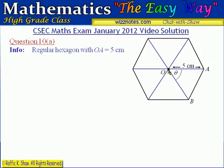Lines from the center to the vertices will form six equal, or six congruent, triangles. I have inserted angle theta which we will be required to calculate. So if this angle is theta, then each of the six angles around the center is also theta. Each of the lines from O to the vertices — OA, OB, and so on — is 5 centimeters, so we really have six congruent triangles.